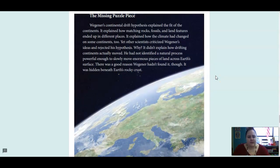Wegener's continental drift hypothesis explained the fit of the continents. It explained how matching rocks, fossils, and land features ended up in different places. It explained how the climate had changed on some continents, too. Yet other scientists criticized Wegener's ideas and rejected his hypothesis. Why? It didn't explain how drifting continents actually moved. He had not identified a natural process powerful enough to slowly move enormous pieces of land across Earth's surface. There was a good reason Wegener hadn't found it, though. It was hidden beneath Earth's rocky crust.